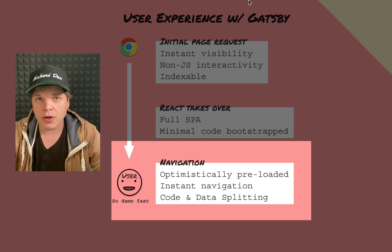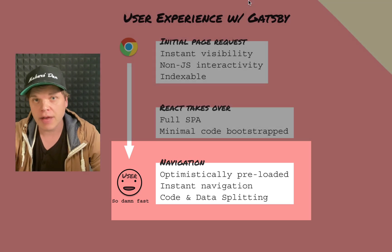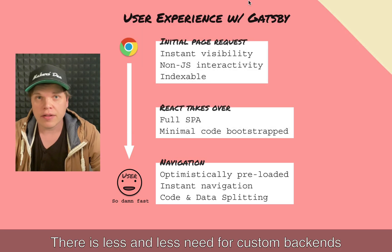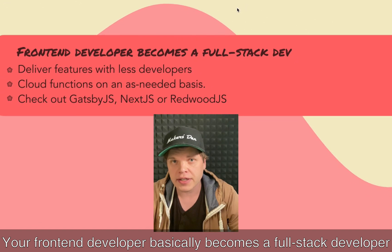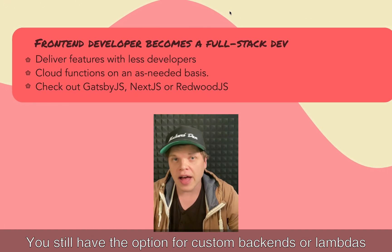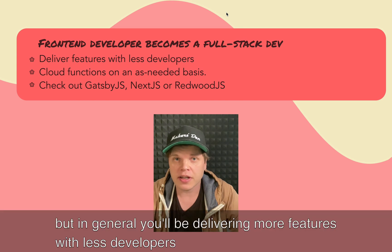Then, of course, you have code and data splitting, so you're lazy loading more of your app as you navigate. There is less and less need for custom backends, and your frontend developer basically becomes a full-stack developer. You still have the option for custom backends or lambdas, but in general, you'll be delivering more features with fewer developers.